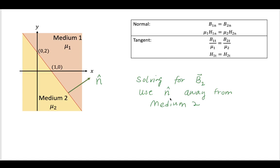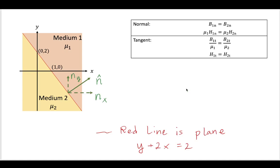So when we're solving for B2, it will be most convenient for us to use a normal vector, so the normal unit vector, going away from medium 2. At the very end of this video, I'm going to show you what happens if you do it backwards and you can still get the same answer. But let's, out of convenience, use a normal vector pointing away from medium 2.